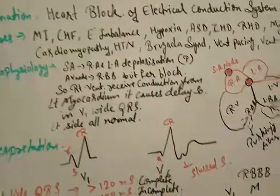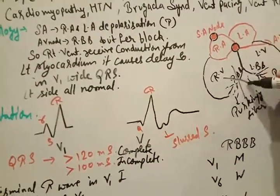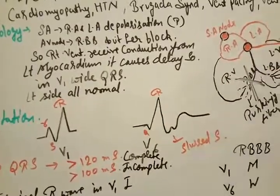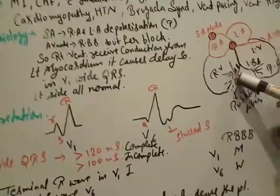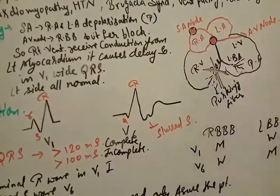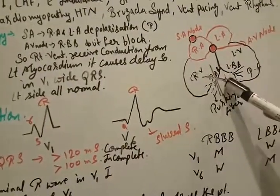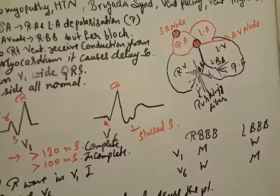But what happens in the case of right bundle branch block? There is a block here in the right bundle branch. If this is not working, what is going to happen? So pathophysiology: